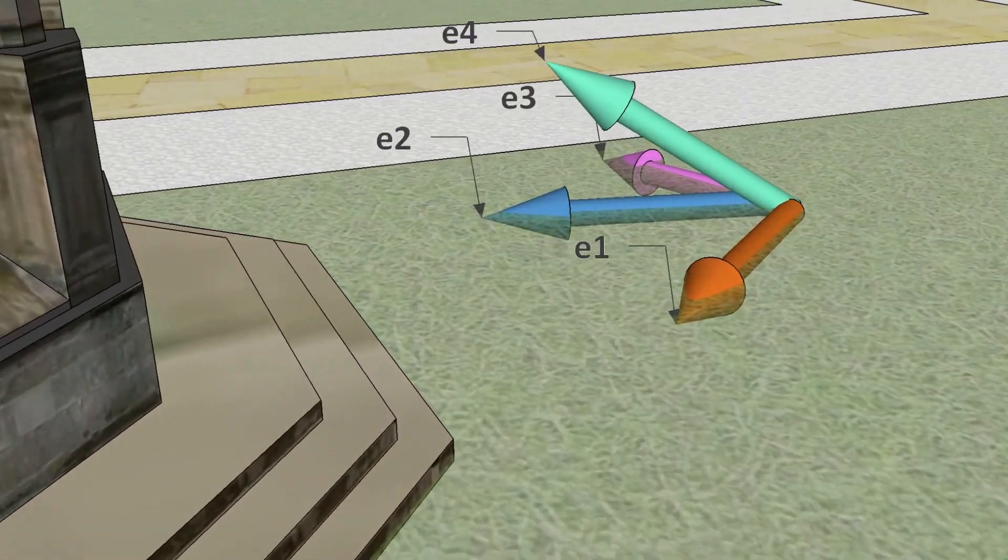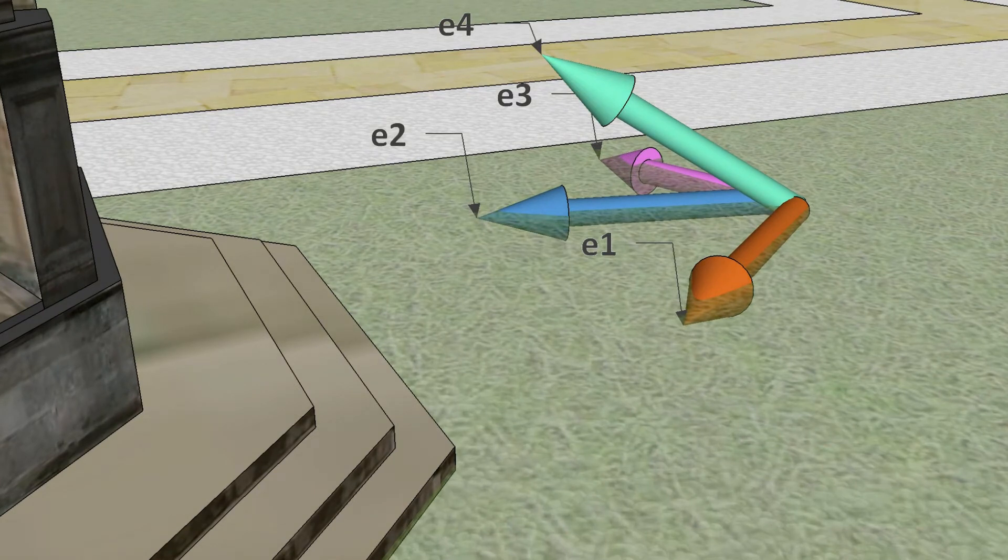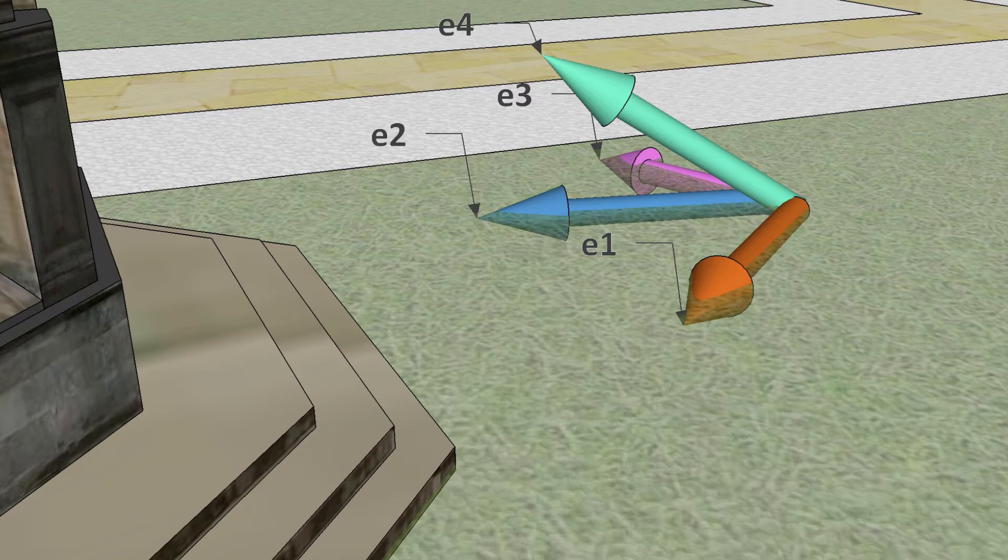Three of the arrows are in the plane of the lawn. If we add up appropriate amounts of these three we can get anywhere in that plane, so the span of e1, e2, e3 is the horizontal plane.